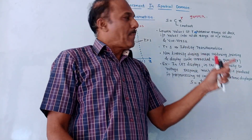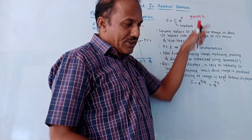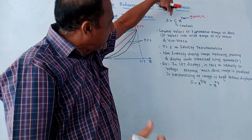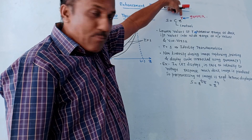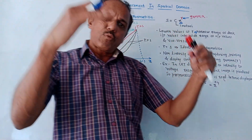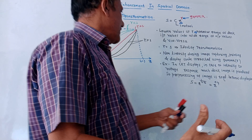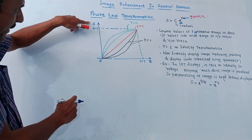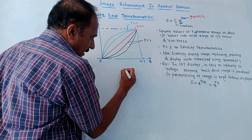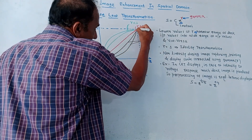The next type is power law transformation. The equation is s = c · r^γ, where γ (gamma) is called the correction factor and c is a constant. r is the gray level of the input pixel and s is the gray level of the output pixel after transformation. The graph plots s versus r with range 0 to L−1. For a black and white image, the range is 0 to 255.